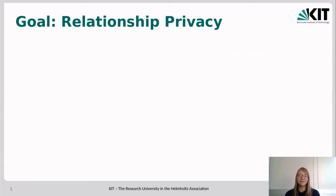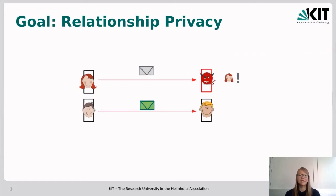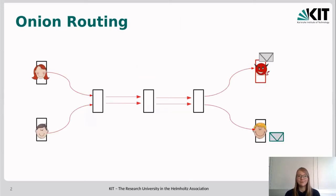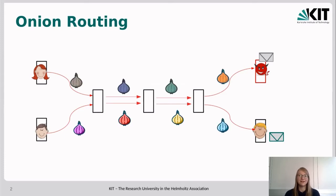If we want to realize this goal, Alice cannot send a message directly to the receiver because the adversary is likely to be able to observe this. Furthermore, we do not trust the receiver, and the receiver might be collaborating with the adversary. So instead we need some kind of indirection, and for this we use onion routing. Onion routing employs multiple relays between the senders and receivers of the communication, and the message from the sender is encrypted in multiple layers — one layer for each relay — so that each relay peels off one layer of this packet, which is also called an onion because it consists of many layers.